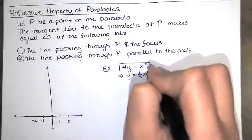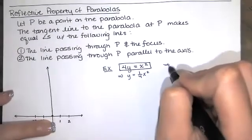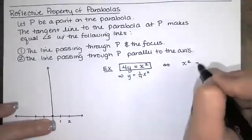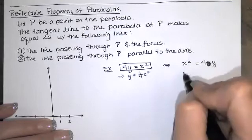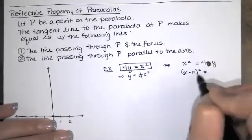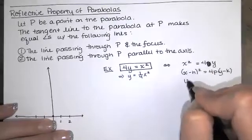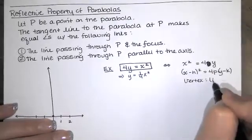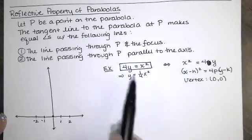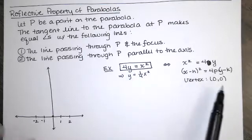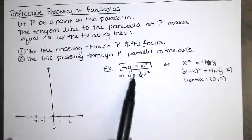This is the standard form of the equation of a parabola. Normally standard form is written with the perfect square on the left and the variable to the first power on the right. By pattern matching, this is x minus h squared equals 4P times y minus k. We're not subtracting anything from x or y, so the vertex of our parabola is (0, 0), which is exactly what we got when we substituted x equals zero.